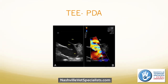This is a transesophageal echo of a PDA. Echo probes can be placed down the esophagus in an anesthetized animal to give a clearer picture of the heart. In this image, here's the aorta up top, the pulmonary trunk down here, and you can see the PDA connecting the two. The bright yellow and blue represents the continuous turbulent flow coming from the aorta into the pulmonary trunk.